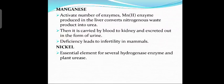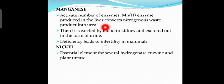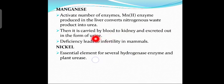Good morning students. Today let us start from manganese. Manganese activates a number of enzymes present in our body. Manganese in the second oxidation state is produced in the liver and converts nitrogenous waste into urea. It is then carried by blood to the kidney and excreted in the form of urine.